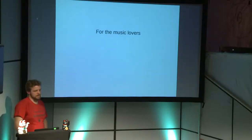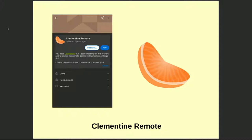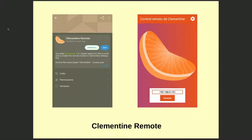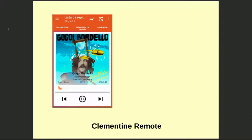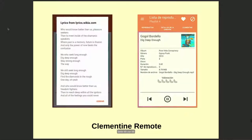I'm a big music lover, so I was very happy to discover the Clementine Remote app. Clementine is a music player, and with this app you can remotely control the running Clementine application on your Linux distribution over the same Wi-Fi. You can play next or previous songs, adjust volume, see track metadata, and — a really nice feature — double-tapping the current track fetches the lyrics from Wikipedia. Just awesome.